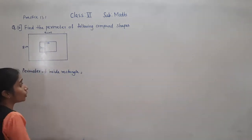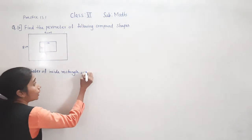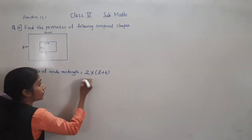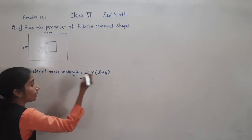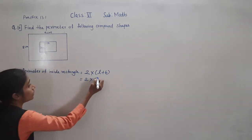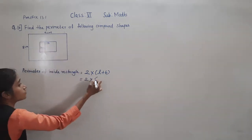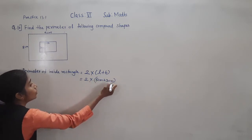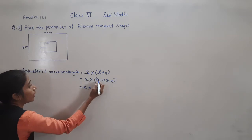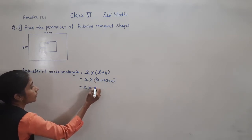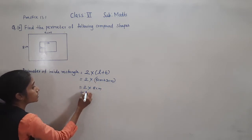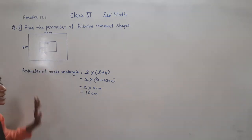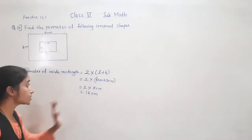What is the perimeter of a rectangle formula? 2 into bracket, length plus breadth. So 2 multiplied by length — length is 5 cm — plus breadth, 3 cm. So 2 into bracket 5 plus 3 equals 8 cm. So 2 times 8 is 16. Perimeter of inside rectangle is 16 cm.